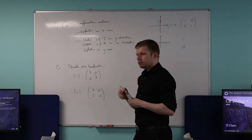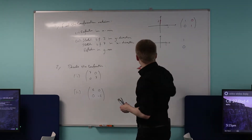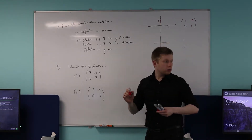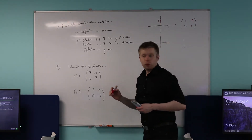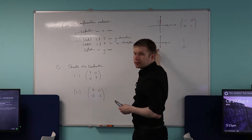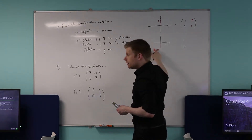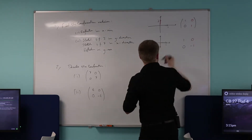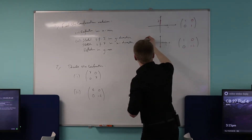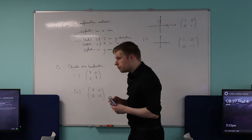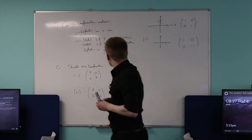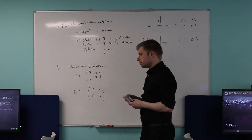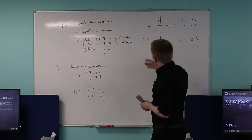Where will j end up? j will end up down here. What are the coordinates of j after it's been reflected in the x-axis? Zero, negative one. So this is the answer to part one. The reflection is on the y-axis here — it's a reflection in the x-axis, so we change the y. The x remains the same.